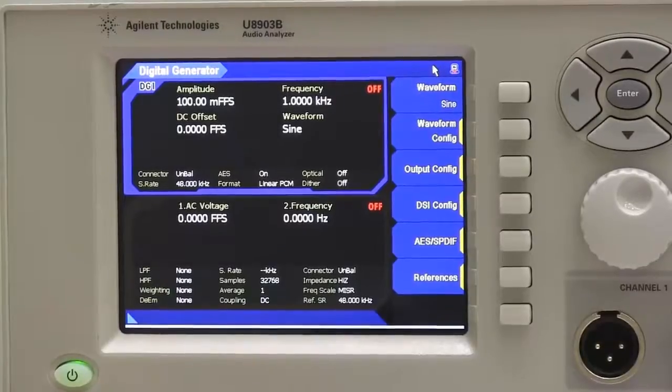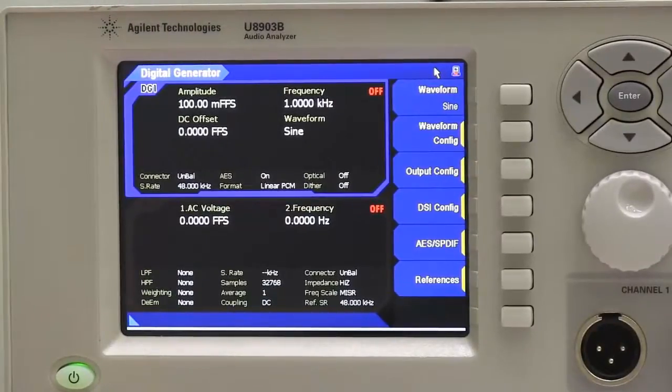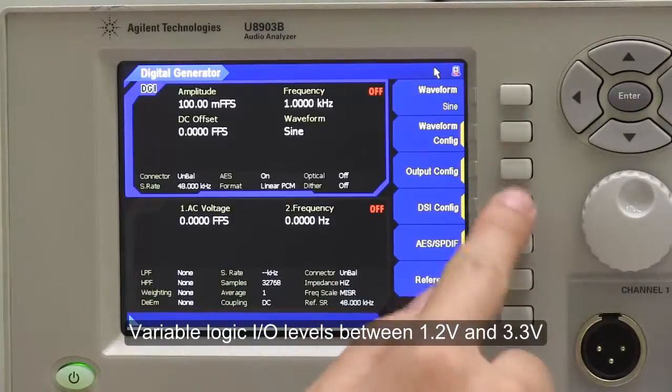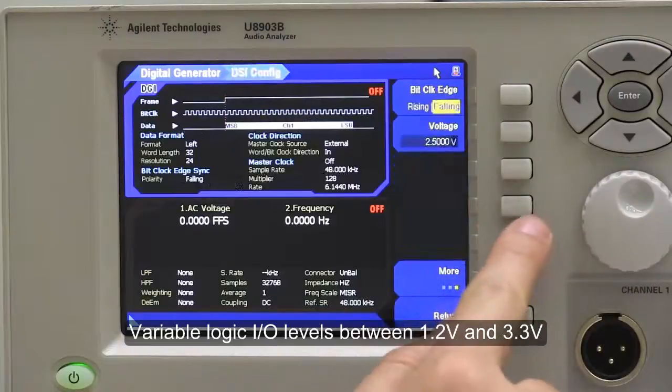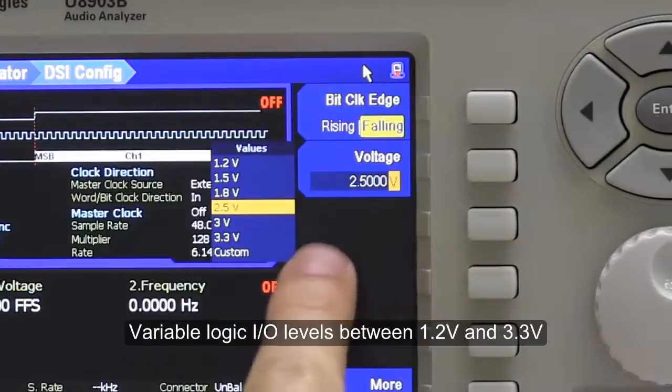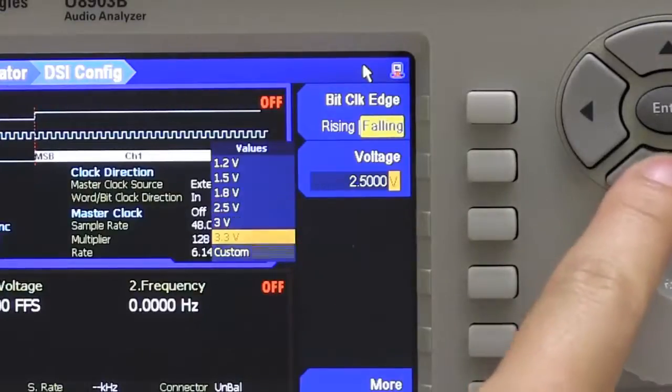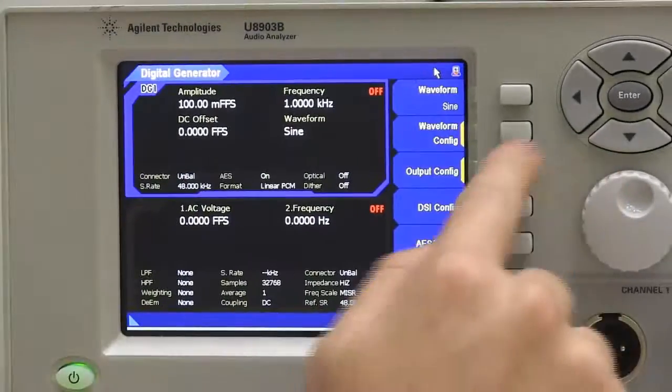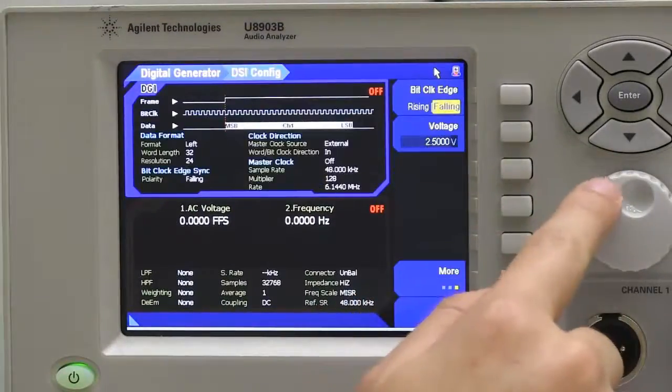The U8903B DSi interface comes with completely variable logic IO level between 1.2V and 3.3V. As you can see here in the DSi configuration, the user can select the voltage between 1.2V and customize your own voltage level as well. This offers the ultimate in compatibility with current and future devices.